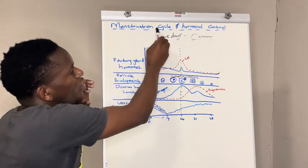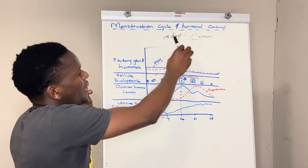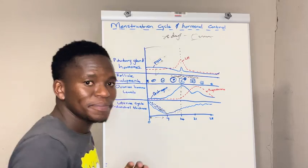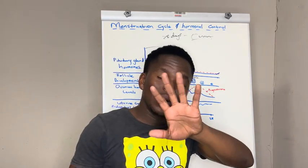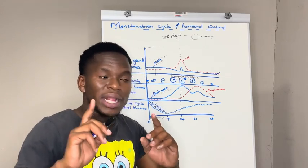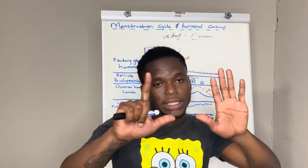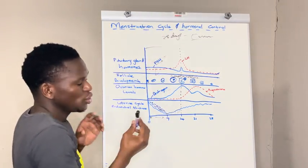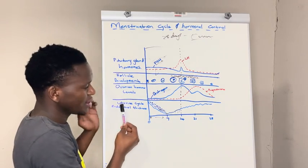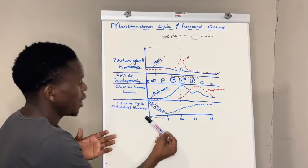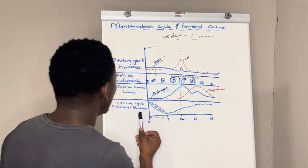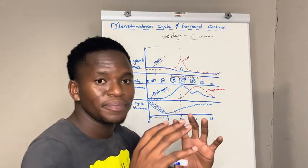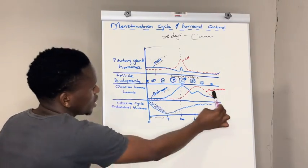The whole cycle takes 28 days, and per cycle we're going to have one ovum being released. The menstrual cycle is divided into two cycles: the ovarian cycle and the uterine cycle. For the uterine cycle we observe the thickness of the endometrial lining, and for the ovarian cycle we check the ovarian hormones — estrogen and progesterone.